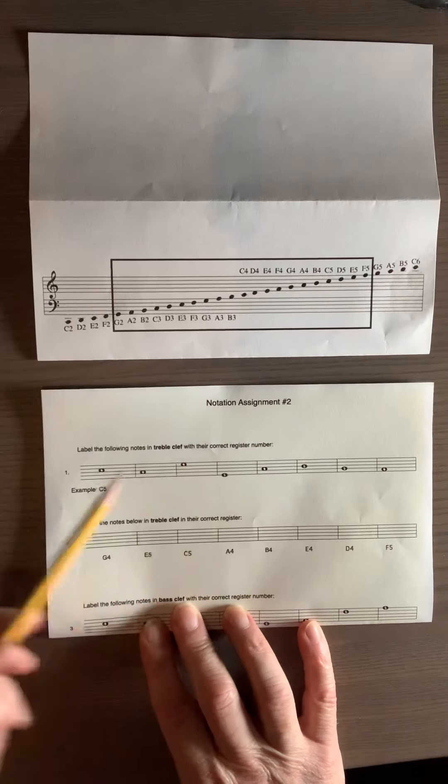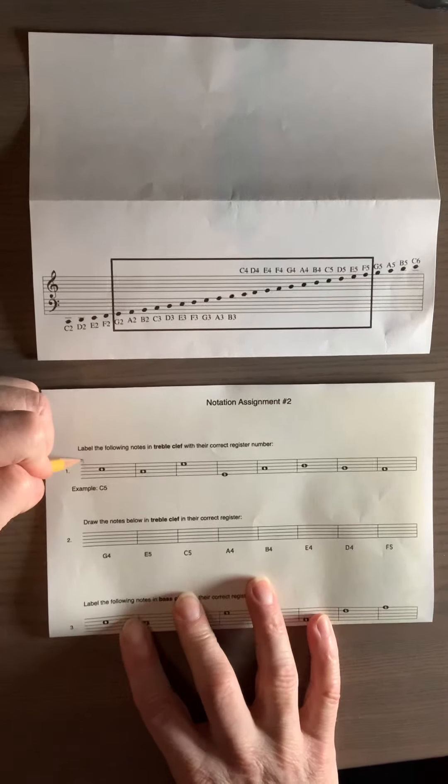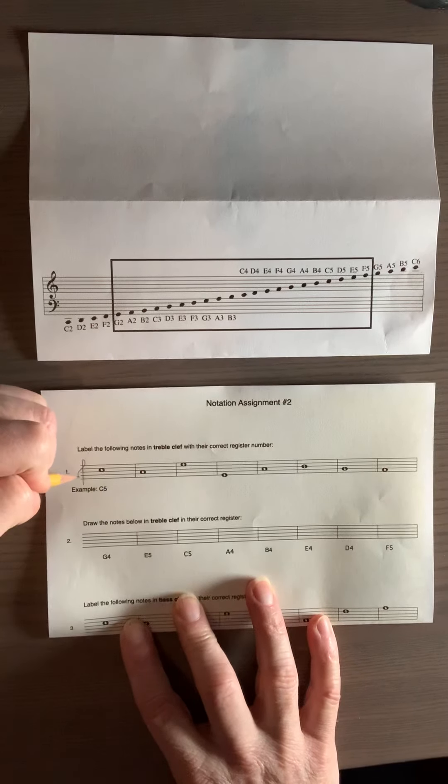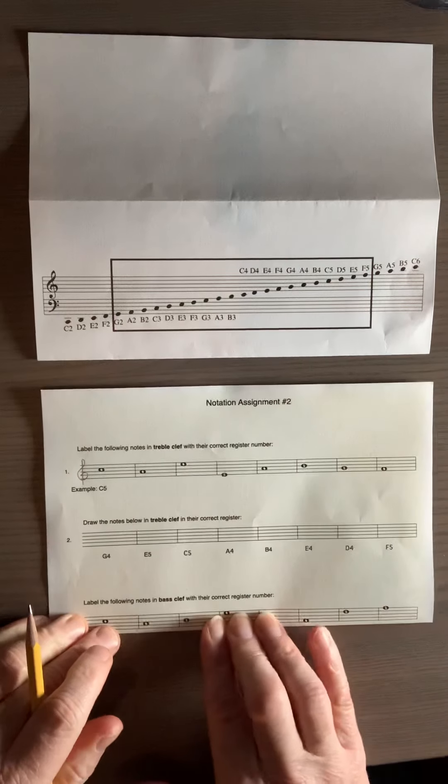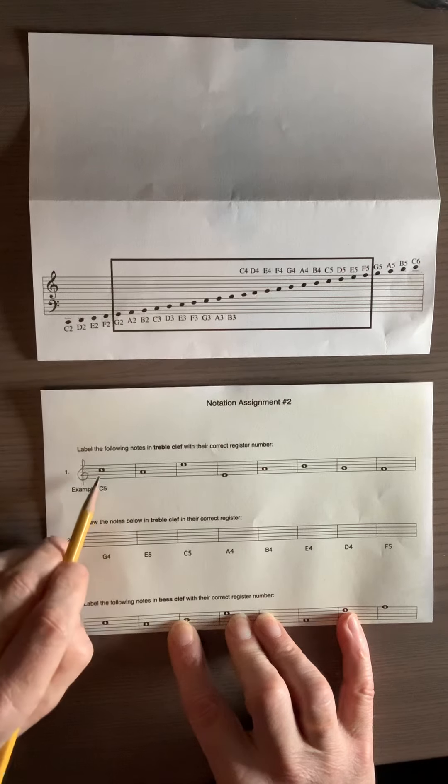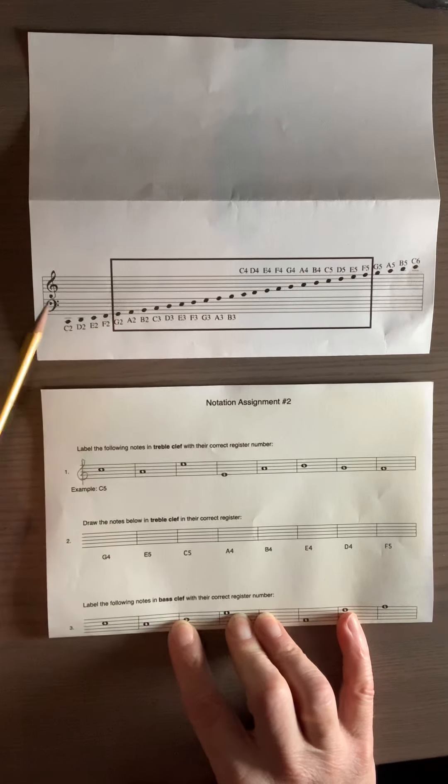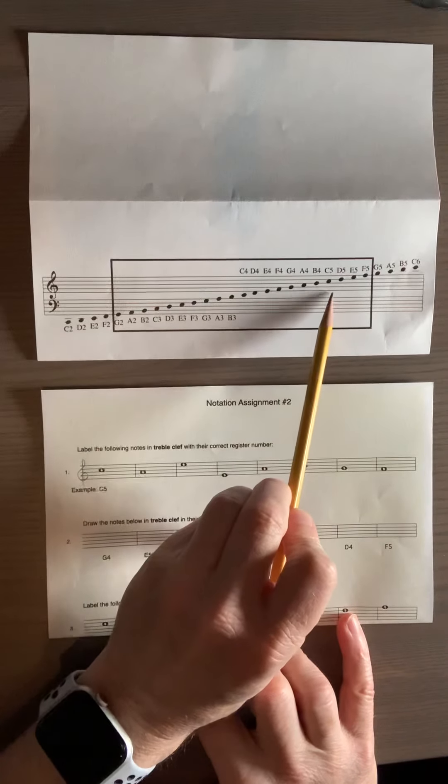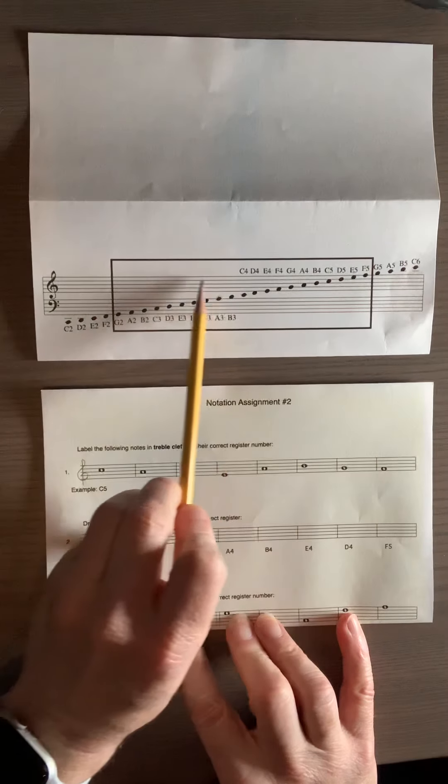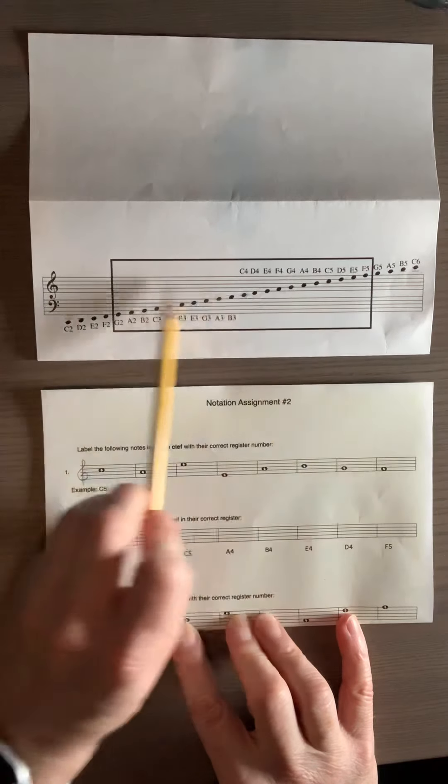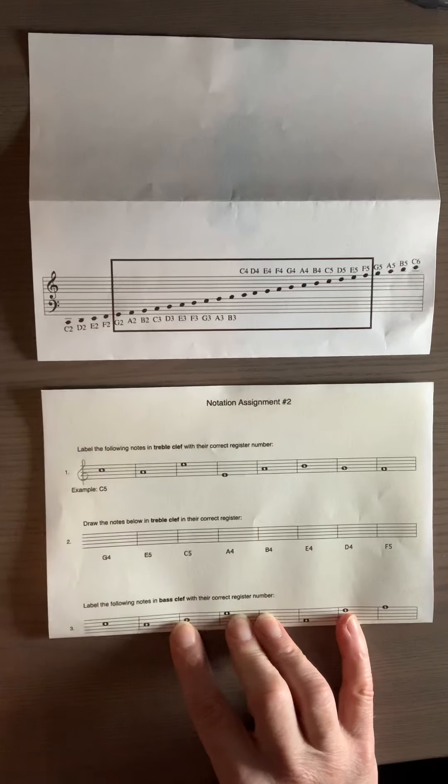Notice it says in treble clef so you got to draw the clef. I'm going to draw one right here. There we go. That one already given to you, C5. How do you know that's C5? Well, there it is. It's in the third space in treble clef. Always look to the left in this diagram to make sure you're in treble clef or bass clef.